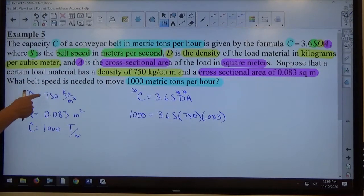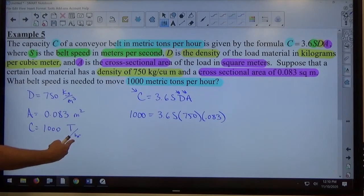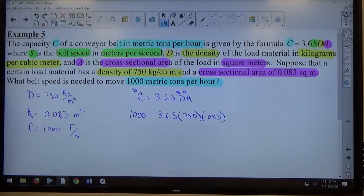The unit I get for belt speed should be what it's supposed to be, meters per second. So the fact that density was the right unit for density, area was the right unit for area, C was the right unit for C, S should be the right unit for S. So meters per second is what I get out of this.